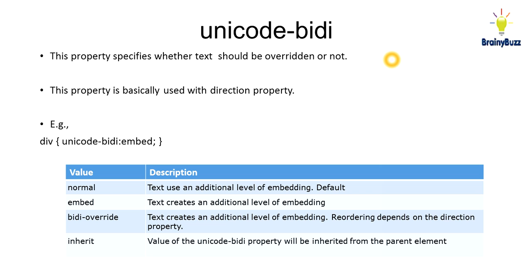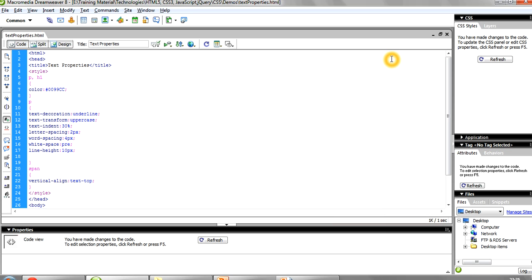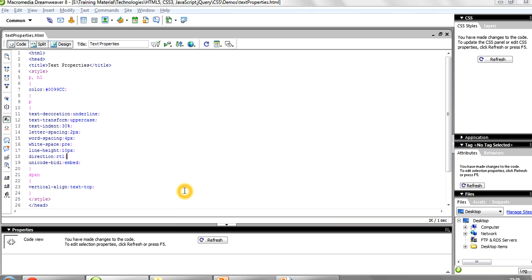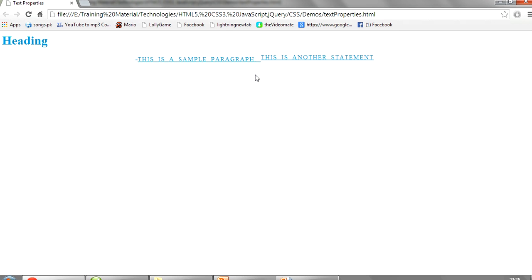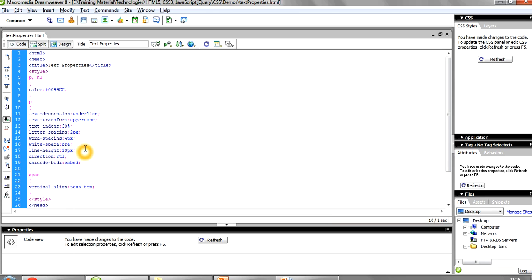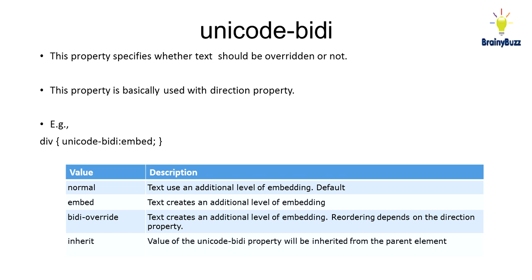We also have Unicode-bidi. This property specifies whether the text should be overwritten or not. It is basically used with the direction property, and you can give values like embed, normal, bidi-override, or inherit. I've given Unicode-bidi as 'embed' and direction as RTL. After refreshing, you can see the difference with a hyphen visible. In bidi-override, text creates an additional level of embedding and reordering depends on the direction property. Thanks and have a nice day.